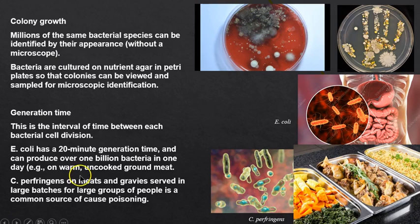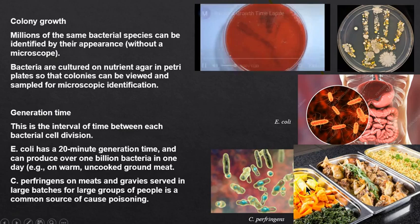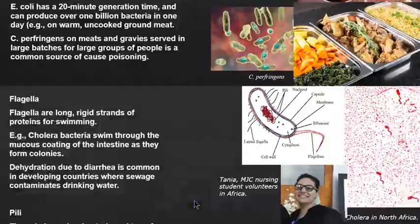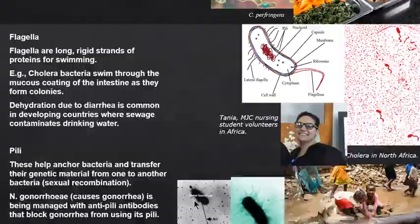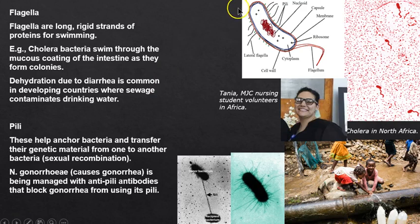Clostridium perfringens tends to be found where food is kept warm in large batches. Flagella allow bacteria to swim — think of cholera. Cholera kills many people around the world, especially children, because of dehydration from diarrhea — losing valuable water.